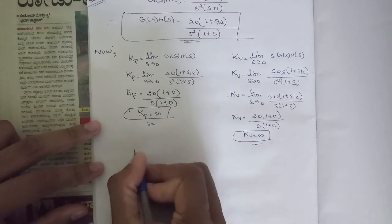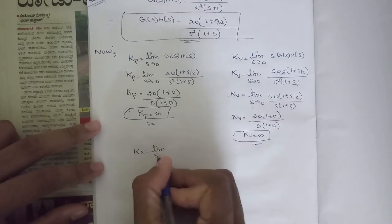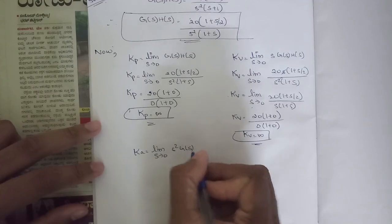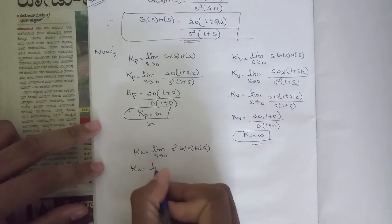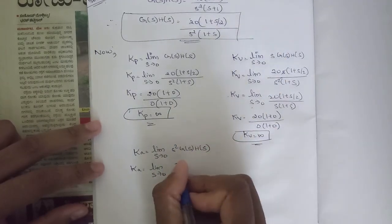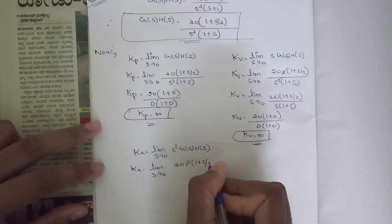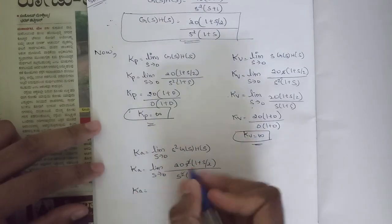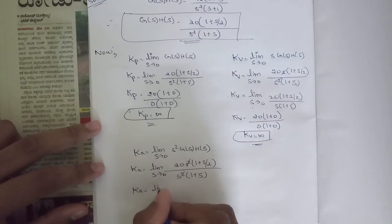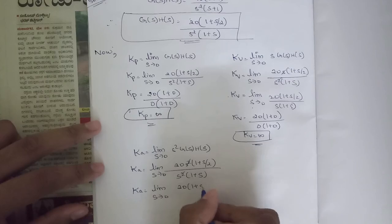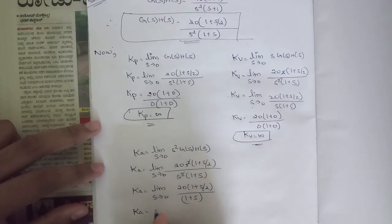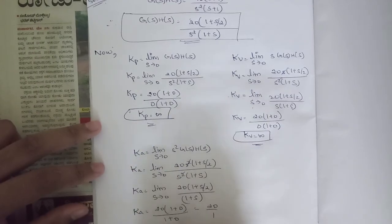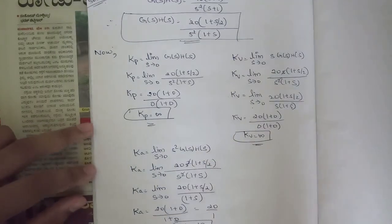Finding Ka: the formula is Ka = lim(s→0) s²·G(s)H(s). So Ka = lim(s→0) 20s²·(1 + s/2) / [s²·(1 + s)]. The s² terms cancel, leaving lim(s→0) 20·(1 + s/2) / (1 + s). Applying the limit gives 20·(1+0)/(1+0) = 20/1 = 20. Therefore Ka = 20.